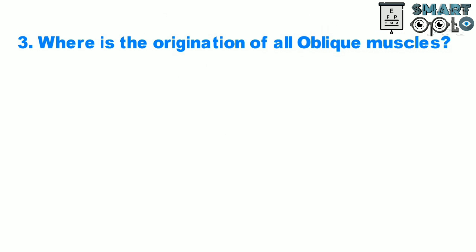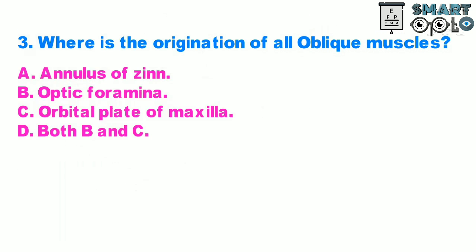Question 3. Where is the origination of all oblique muscles? A. Annulus of Zinn, B. Optic Foramen, C. Orbital Plate of Maxilla, D. Both B and C.